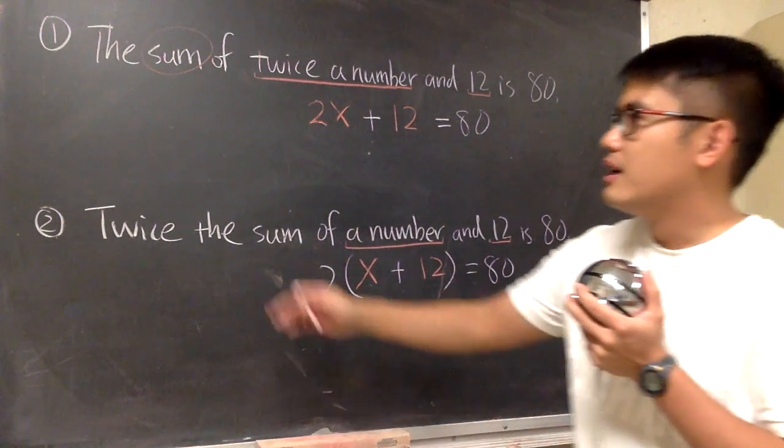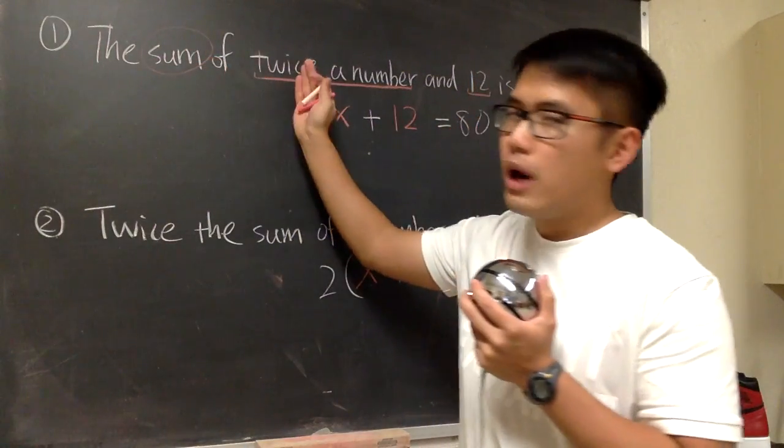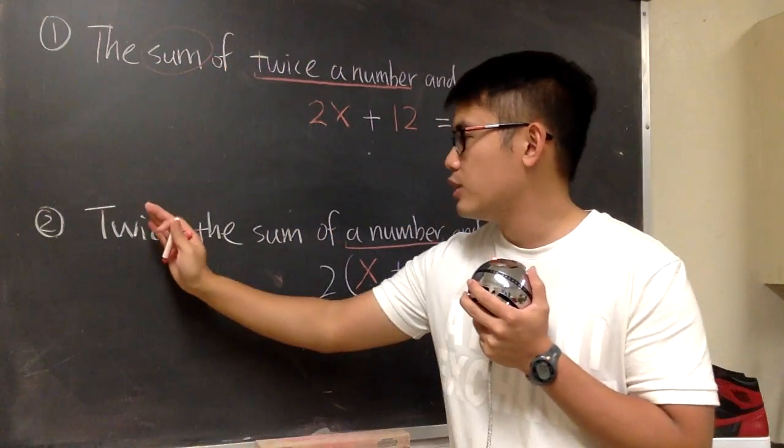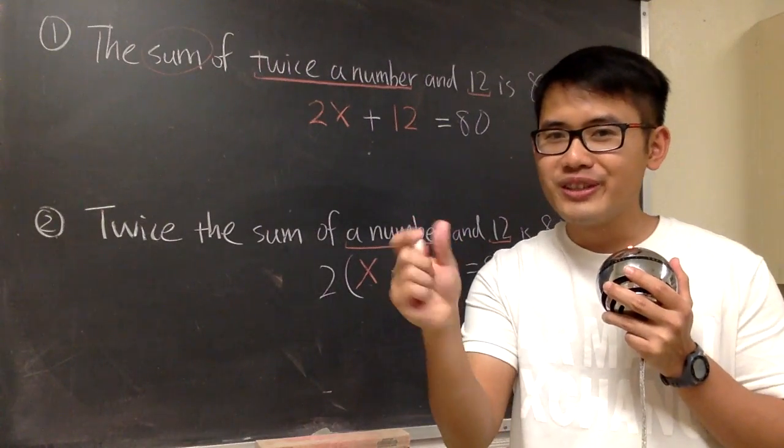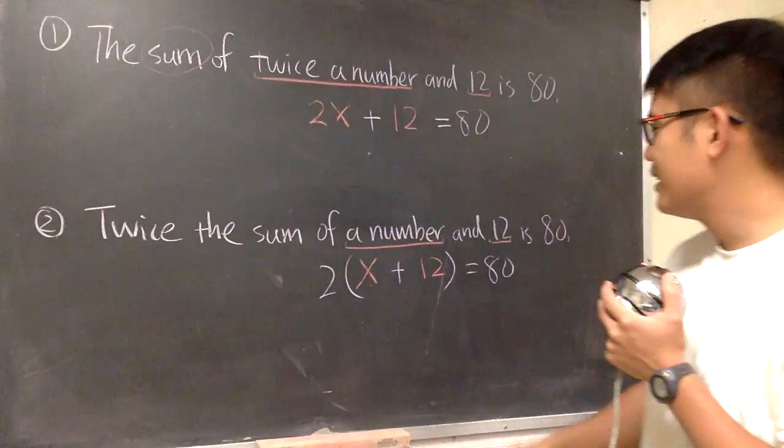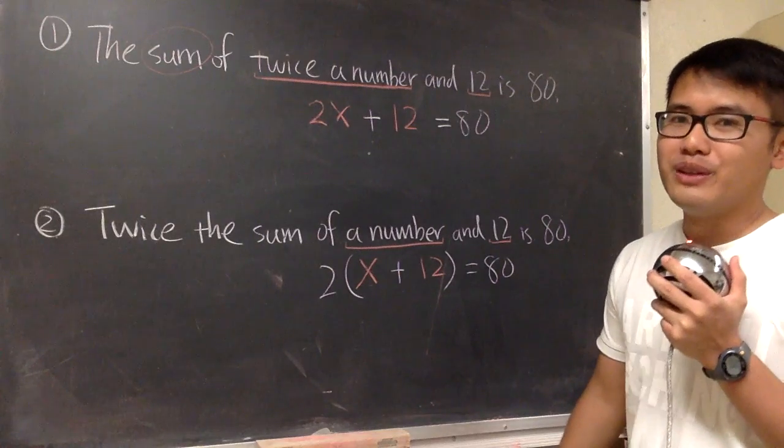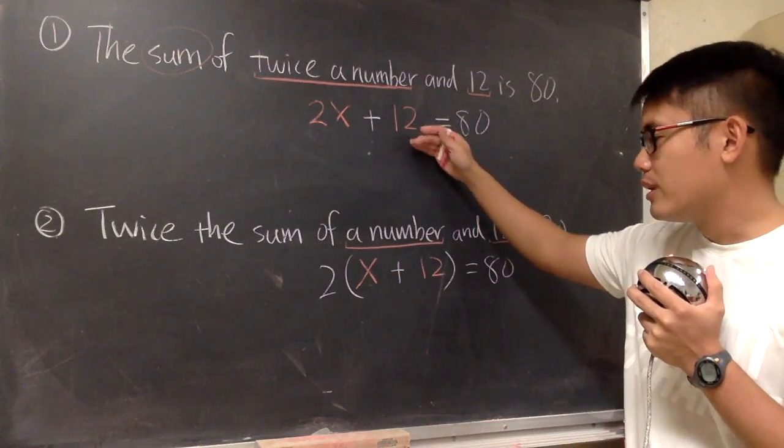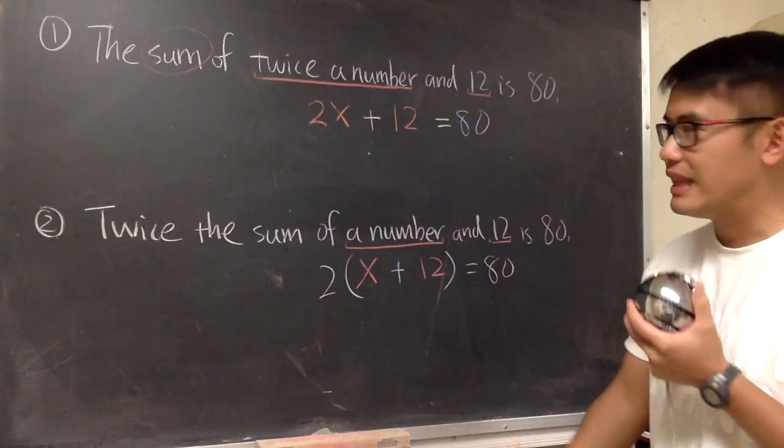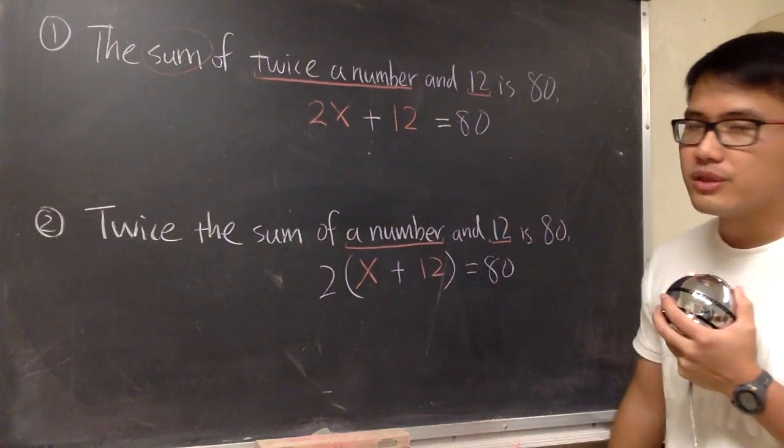And you see, the first one says sum of twice. But then the second one says twice the sum. Even though you just change the question right, just a little bit. The setup is very different. And you know the parenthesis matters so much. And let's solve for the unknown number in these two questions.